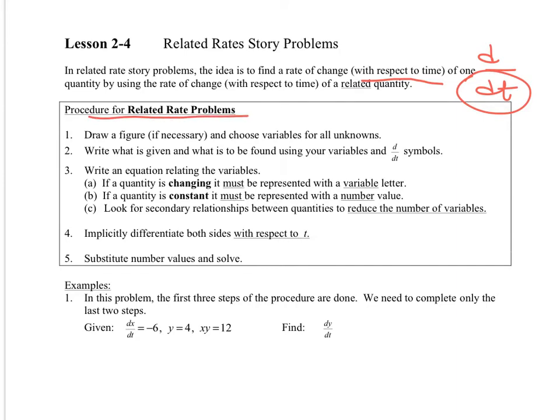So the procedure for Related Rate Problems: first of all, draw a picture. You need to have a picture. I like to give you a picture, but I don't always do that. But then you have to find variables for all of the unknowns. Also, write out what is given and what you need to find. Then three is write an equation relating the variables. And I can give you some hints on this, but sometimes you've got to come up with stuff. Other times they will give you already a related equation for this.